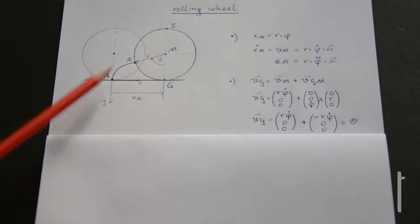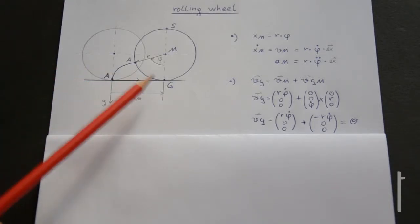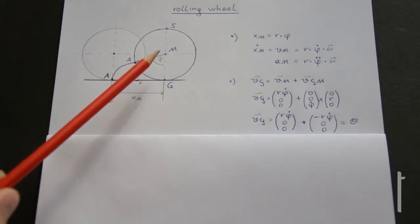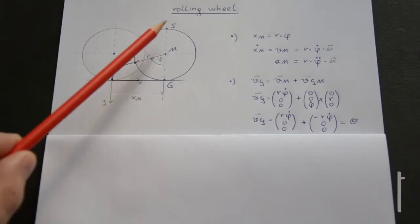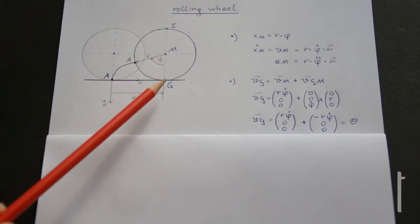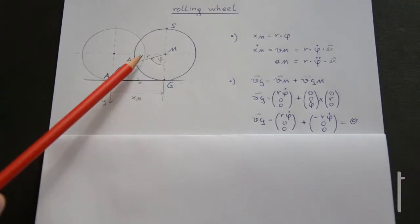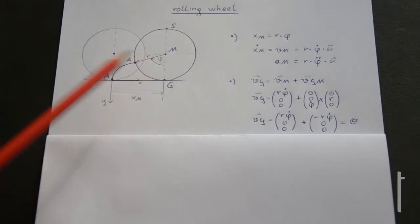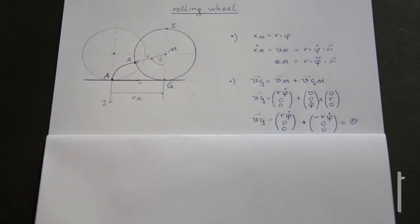You can see a coordinate system here with an x-direction and y-direction. This is the center point M, here is point S, point G, and we have a radius R, point A, and this is the angle phi.